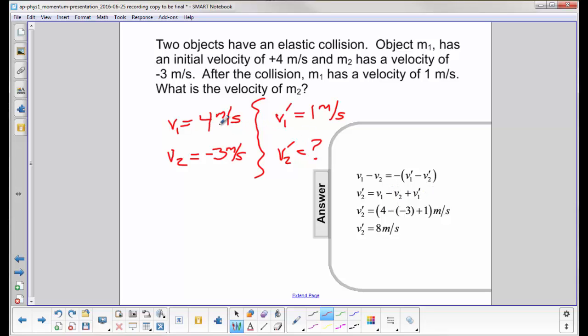V1 is 4. V2 is negative 3. V1 prime is 1. So I have 4 minus a minus 3 plus 1.